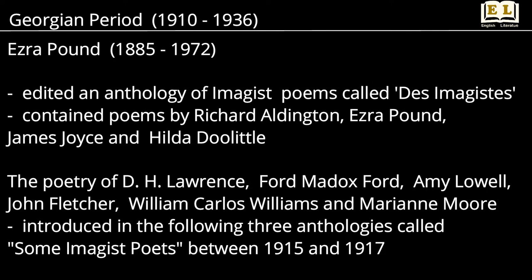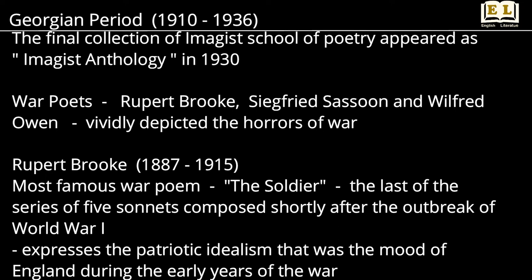Ezra Pound edited an anthology of Imagist poems called Des Imagistes, which contained poems by Richard Aldington, Ezra Pound, James Joyce, and Hilda Doolittle. The poetry of D.H. Lawrence, Ford Madox Ford, Amy Lowell, John Fletcher, William Carlos Williams, and Marianne Moore was introduced in the following three anthologies called Some Imagist Poets between 1915 and 1917. The final collection of the Imagist school of poetry appeared as Imagist Anthology in 1930.